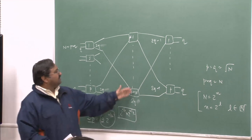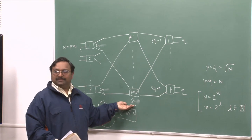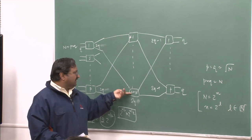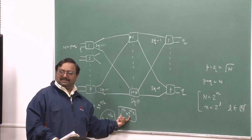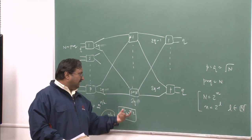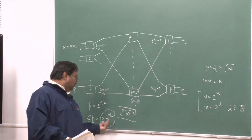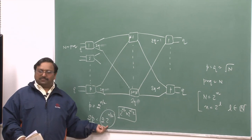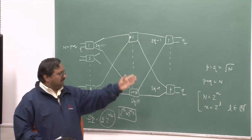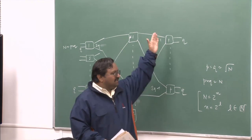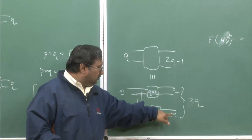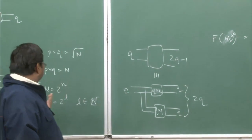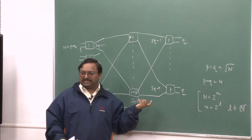In the middle stage, 2q elements are required, each of p×p type — that is p×p only. So again, 2·2^(n/2) in this stage. Similarly on the output stage, because it is the mirror image — 2q inputs and q outputs — I can also implement the same switch.